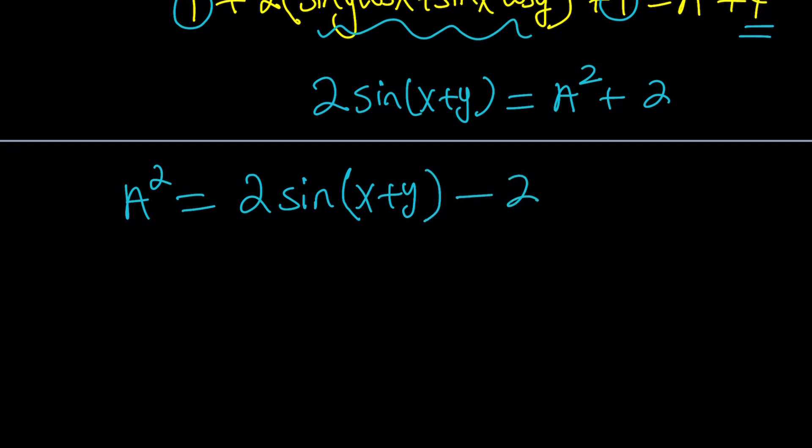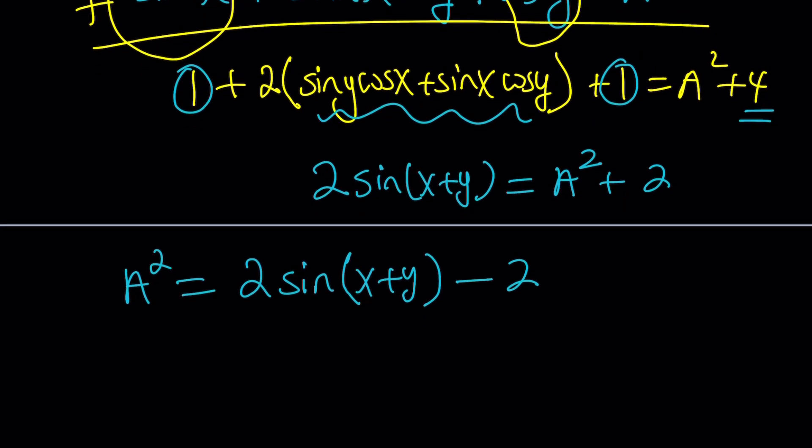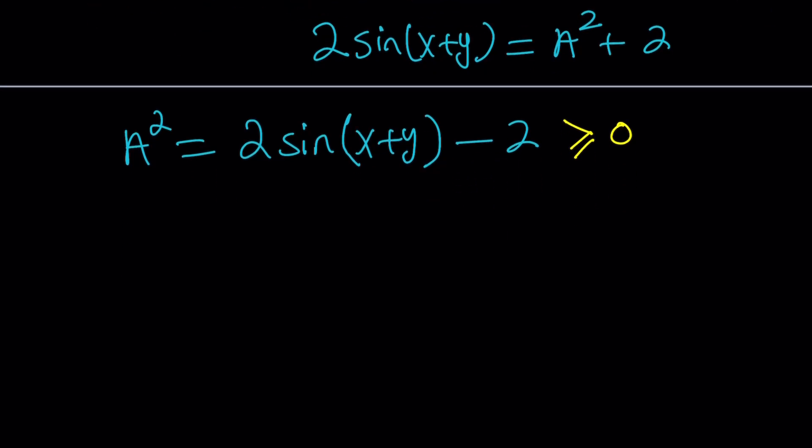Now, one thing we know, because a is real, a is a real number, a squared is always going to be greater or equal to 0. In a recent video, I gave you the definition of real numbers. Real numbers are numbers whose square is non-negative. That's the most compact definition that I've ever seen. So a squared must be greater or equal to 0 if a is real, which implies that 2 times sine of x plus y is greater or equal to 2. And if you divide both sides by 2, you get sine of x plus y is greater than or equal to 1.